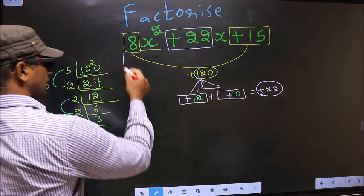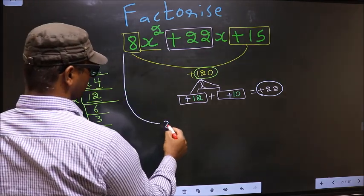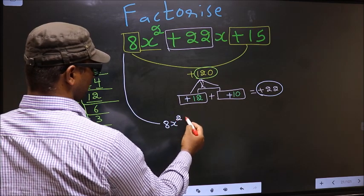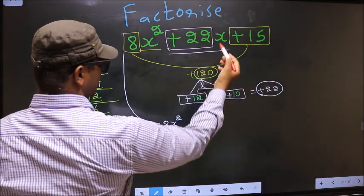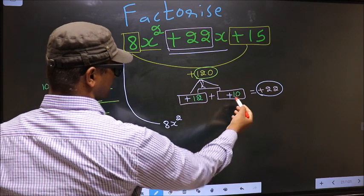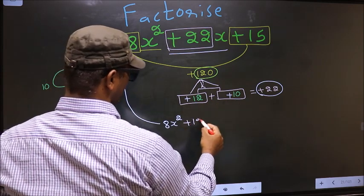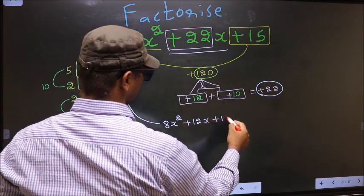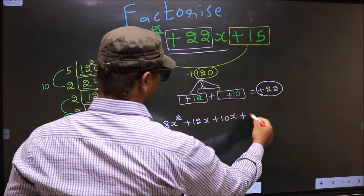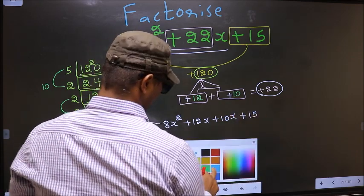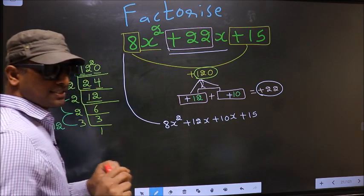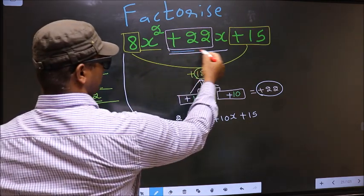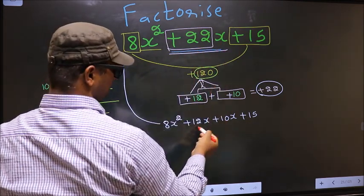Now you should change this. 8x squared. In place of plus 22x, we should write this, that is plus 12x plus 10x plus 15. Did you understand? In place of plus 22x, I have written this.